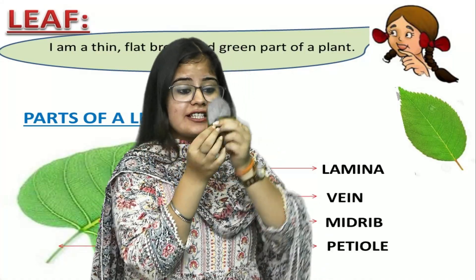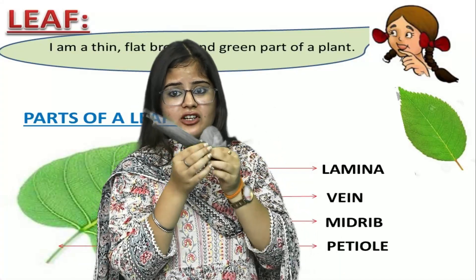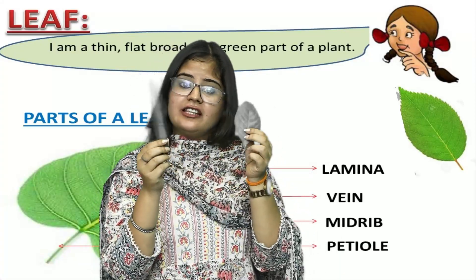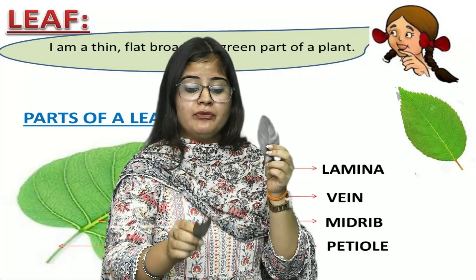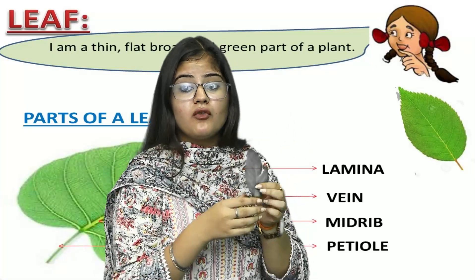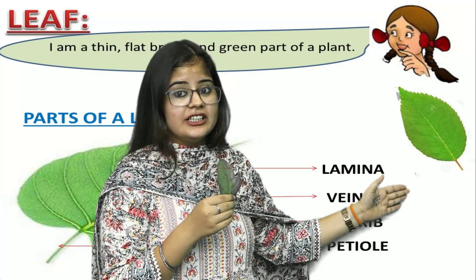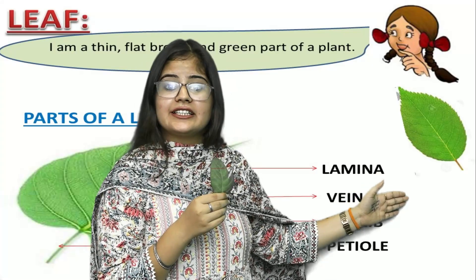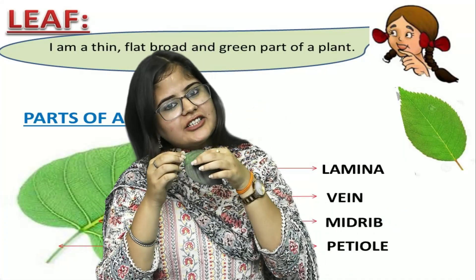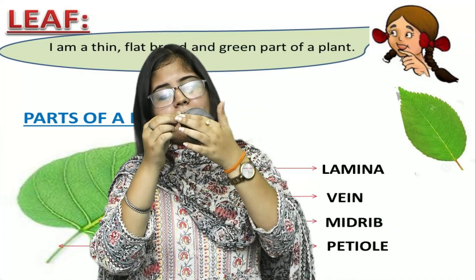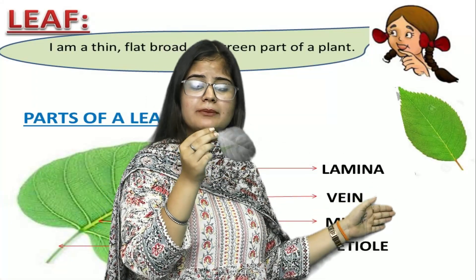This entire broad surface is the lamina. Different types of leaves also have lamina. Moving on to the next part of the leaf — the midrib. As we can guess from the name, the midrib is the middle line running through the leaf.